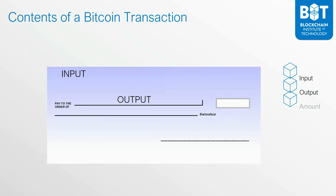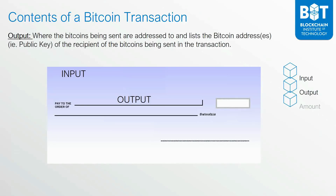The output specifies where the bitcoins being sent are addressed to, and it will list the Bitcoin addresses of the recipients. You can have more than one output as the output of a Bitcoin transaction, and these recipients will be receiving it at their Bitcoin addresses. As specified, the Bitcoin address is a hashed version of the public key of someone.